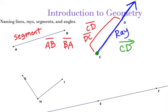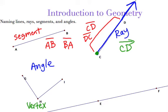This next one is obviously an angle. You name angles with three letters, because an angle is two segments that meet at a common vertex. So H down here is called the vertex, or the corner, of our angle. It's two line segments, GH and IH, that meet at H and form an angle.